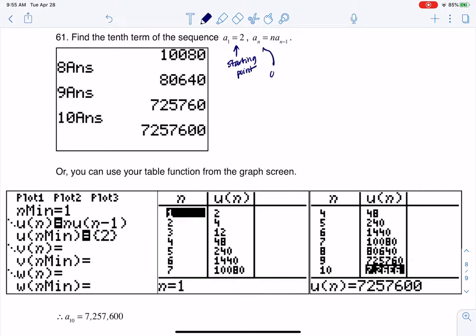And then a sub n, that's your current term. And it's defined in terms of a sub n minus 1, which is your previous term. And whenever your current term is defined in terms of your previous term, we call that a recursive relationship.